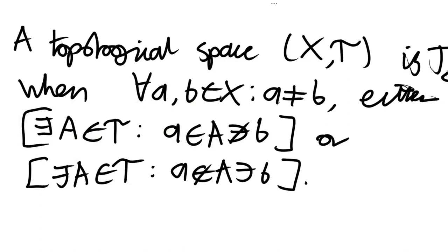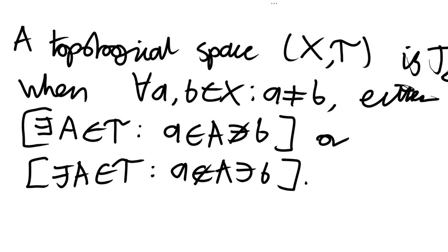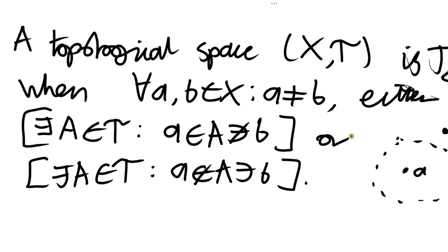Basically, a topological space has T0 when, given any pair of distinct points, we can always find an open set which contains one of those points but not the other. Diagrammatically, it would be something like this: given a pair of points A and B, we can find some open set containing A but not B.